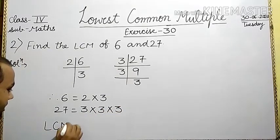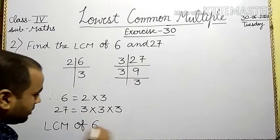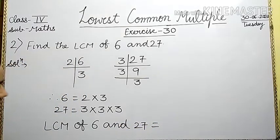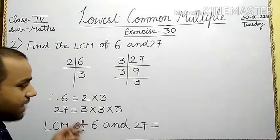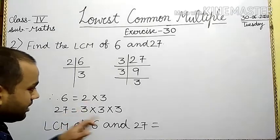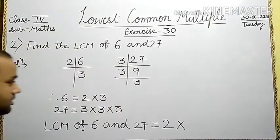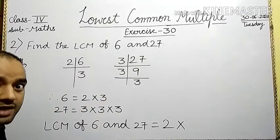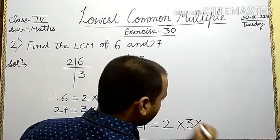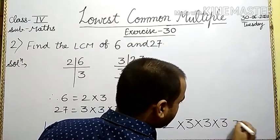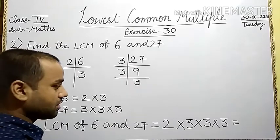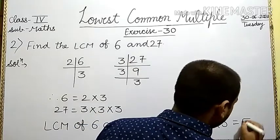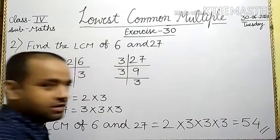And lastly, write LCM of 6 and 27. Which numbers occur maximum times? 2 occurs 1 time. 3 occurs 1 time in 6, but 3 times in 27. So write 3 times — that is the maximum. So we take 2 once and 3 three times: 2 into 3 into 3 into 3. And lastly, we find the product. This is LCM of 6 and 27. This is your required answer. Is it clear?